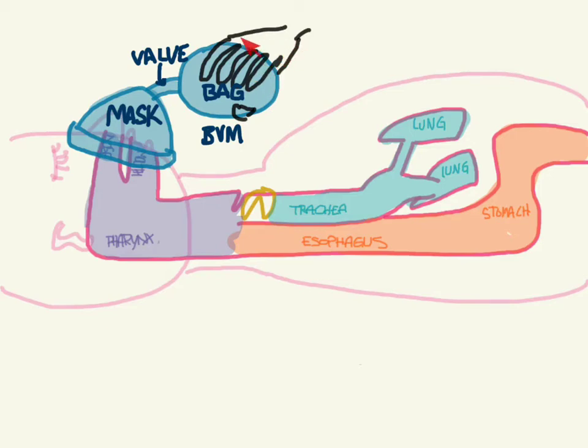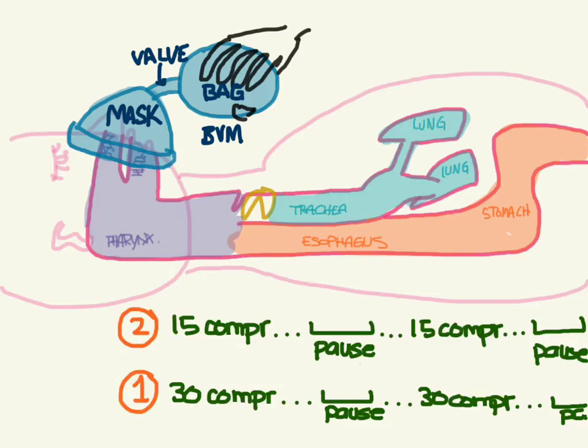How much are you supposed to bag? It depends on the number of rescuers. With one rescuer, do 30 chest compressions then pause for two breaths, then 30 compressions and pause. With two rescuers, you can do 15 chest compressions and pause, give two breaths, then 15 compressions and pause, two breaths. This pause is different than in adult ACLS.